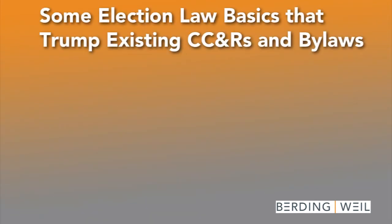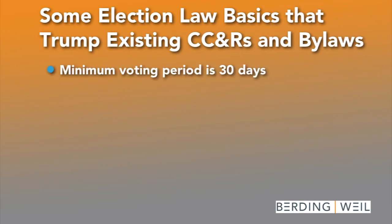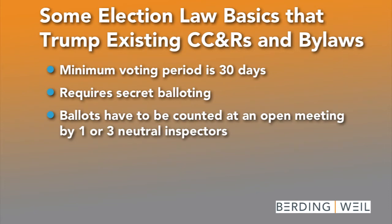Here are some of the election law basics that trump the existing CC&Rs and bylaws for an association. The first one is the minimum voting period for these kinds of elections is 30 days — that's a change, as most of the current law as it was in 2006 required only 10 days. Secondly, the election law requires that we use secret balloting so the name of the voter cannot be identified. The ballots have to be counted at an open meeting.